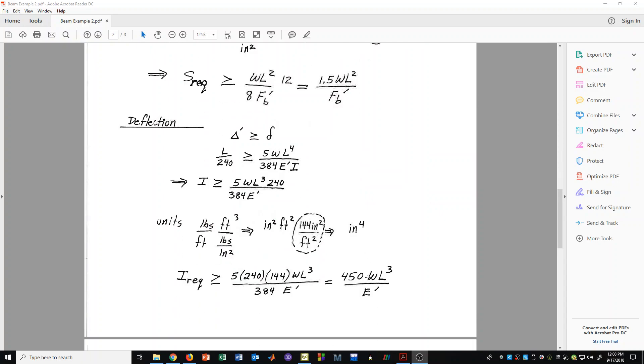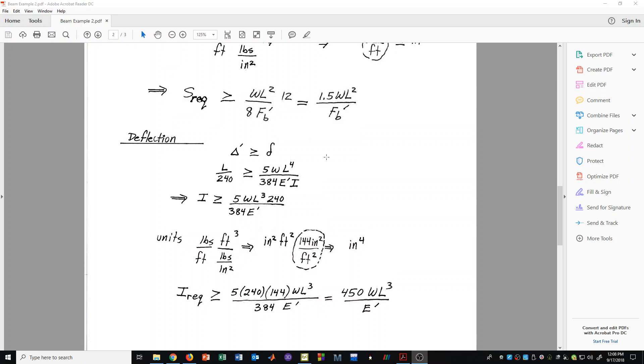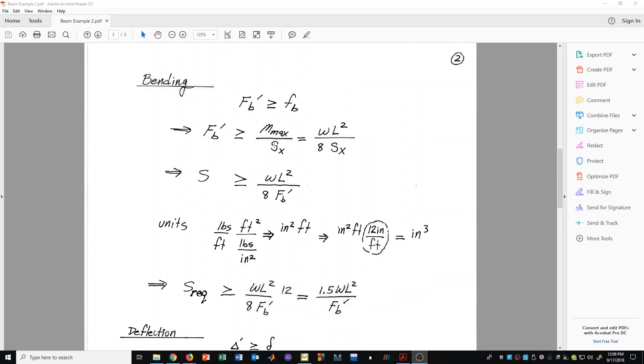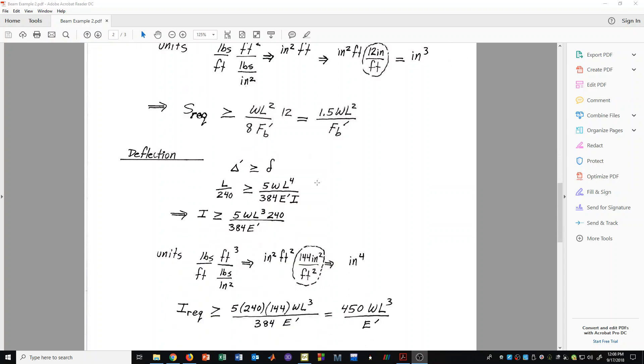Let's now move to deflections. We have delta prime must be greater than or equal to lowercase delta. If we choose an L over 240 deflection criteria, that must be greater than or equal to 5 WL to the fourth over 384EI. This is for a simply supported beam and gives us the deflection at mid-span. We're doing deflections, and this is the expression that we have come to. We want to solve for I. Solving for I, we get 5 WL cubed times 240 over 384 times E prime.